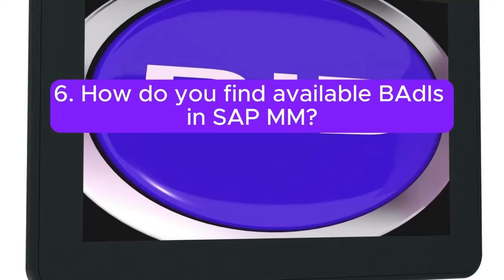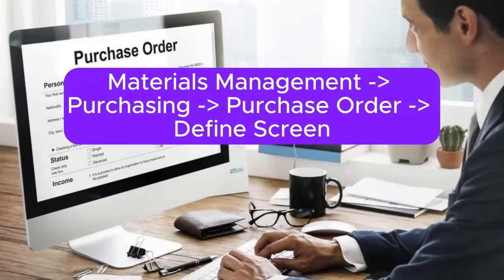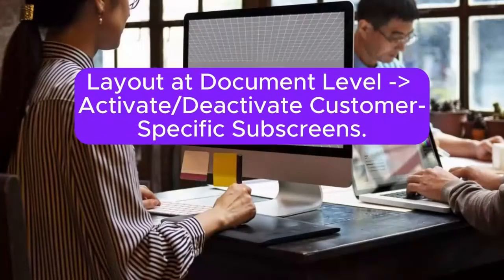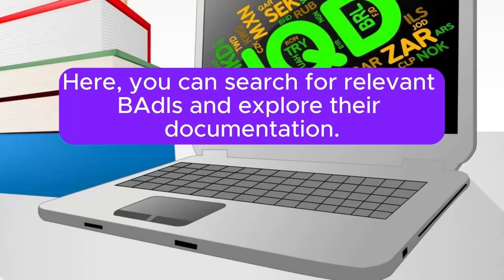How do you find available BAdIs in SAP MM? You can find available BAdIs in SAP MM by using transaction code SE18, or by navigating to the Implementation Guide (IMG) path: Materials Management > Purchasing > Purchase Order > Define Screen Layout at Document Level > Activate or Deactivate Customer Specific Subscreens. Here you can search for relevant BAdIs and explore their documentation.